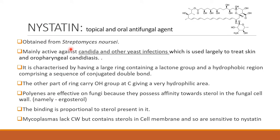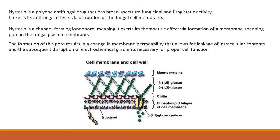Nystatin comes under polyenes. Polyenes are effective on fungi because they possess affinity towards the sterol in the fungal cell membrane — specifically ergosterol. The binding is proportional to the sterol present. Even mycoplasms, which lack a cell wall but contain sterol in their cell membrane, are also sensitive. In the phospholipid bilayer of the fungal cell membrane, ergosterol is present, and nystatin has affinity towards this ergosterol. The fungal cell wall also contains a chitin layer, cross-linking of beta-1,6-glucan and beta-1,3-glucan, and mannoproteins.